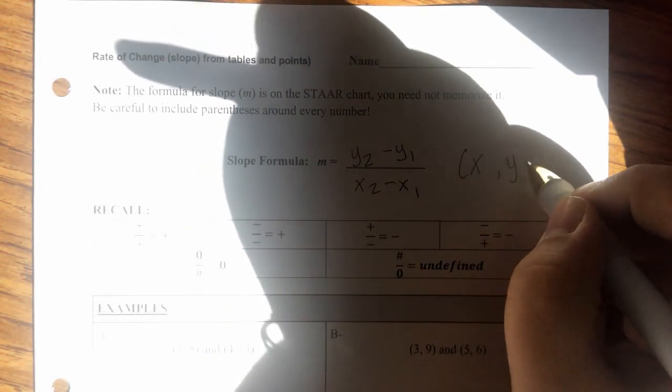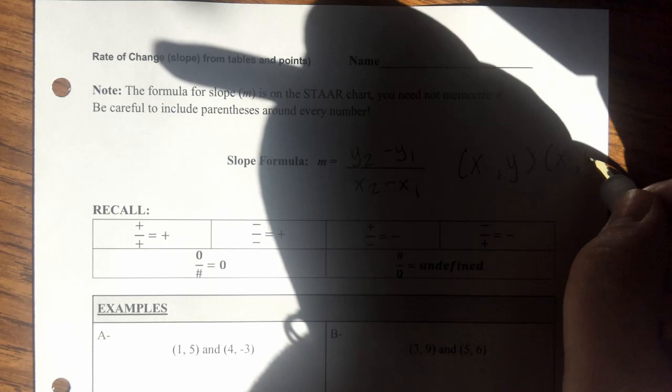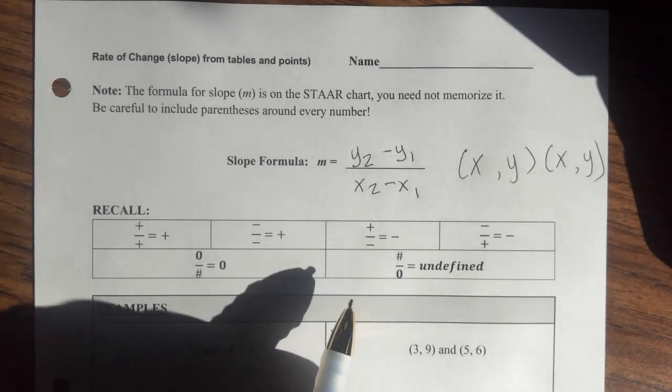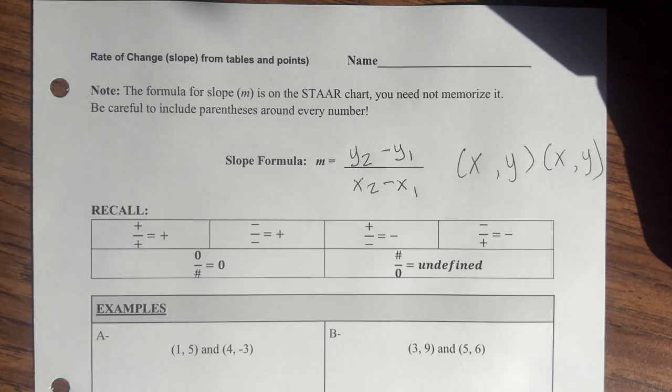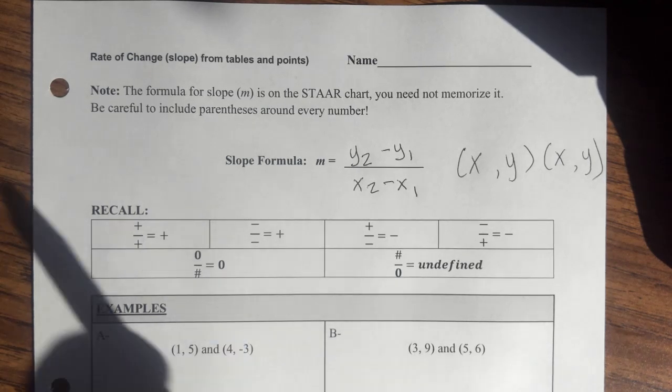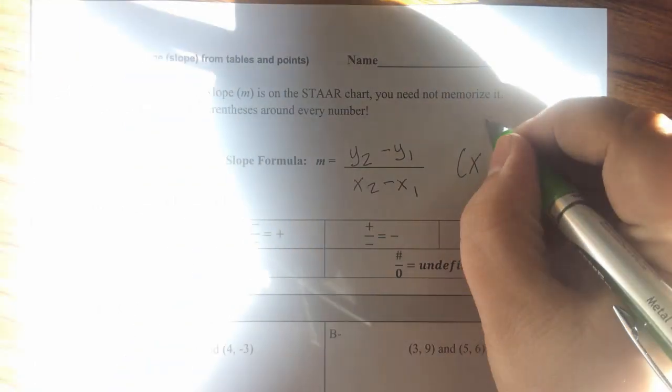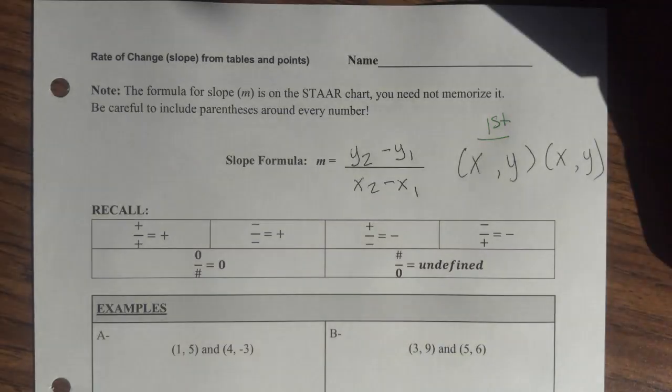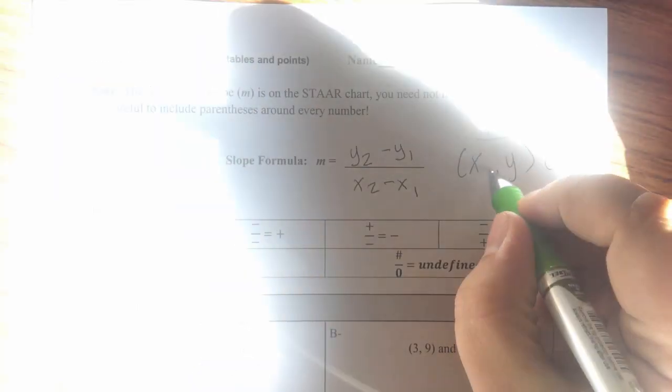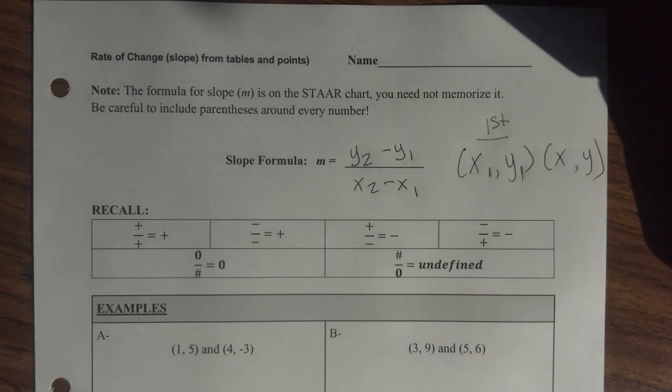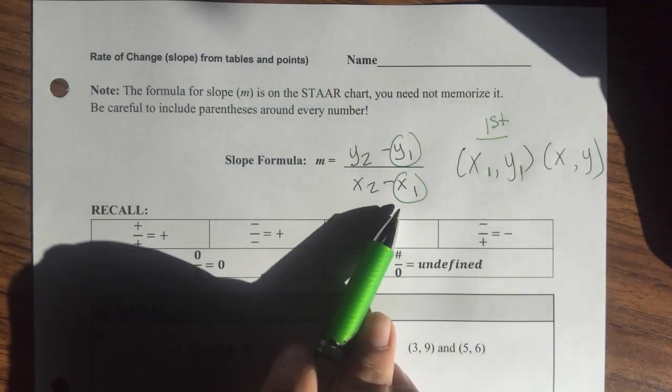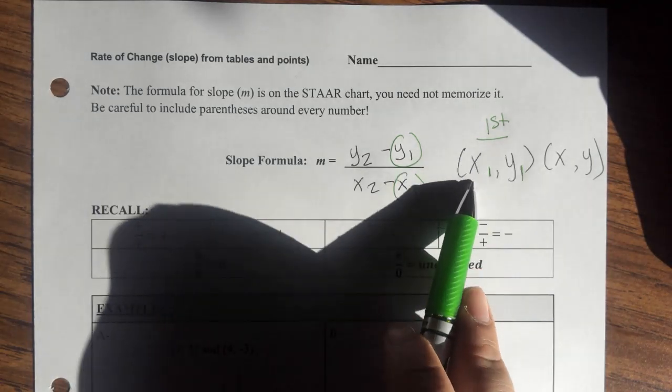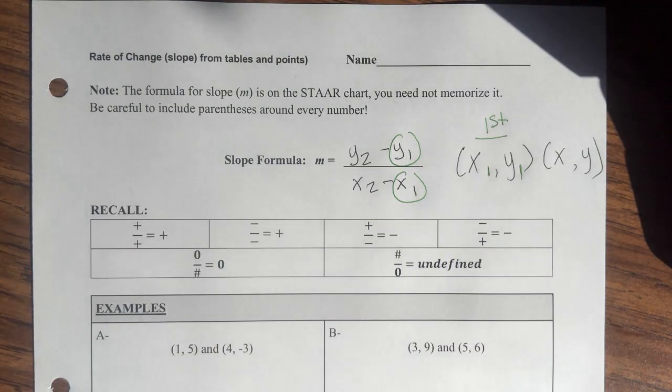We'll have two ordered pairs, x, y, x, y. Okay, and these subscripts actually are just helpful in naming which ordered pair they come from. So if I say that this is the first ordered pair, then I'll name it x1, y1. And that tells you that this x value and this y value from the formula come from this ordered pair, the first ordered pair.